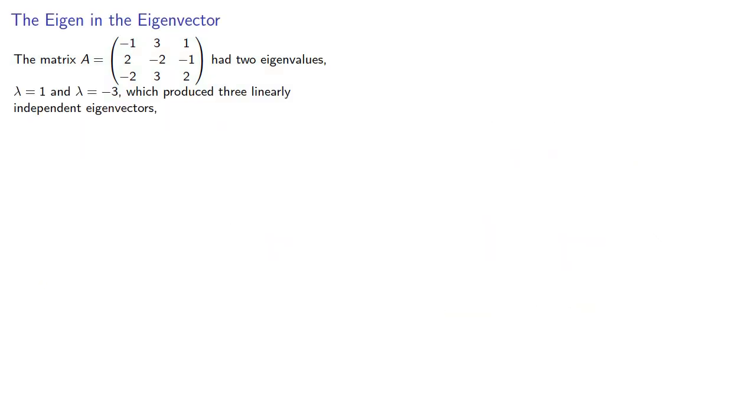Now our matrix had two eigenvalues, lambda equals 1 and lambda equals negative 3, which produce three linearly independent eigenvectors. For lambda equals 1: (1, 0, 2) and (3, 2, 0). And for lambda equals negative 3: (2, -2, 2).